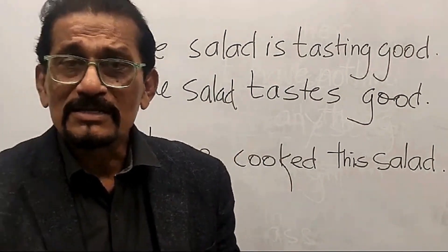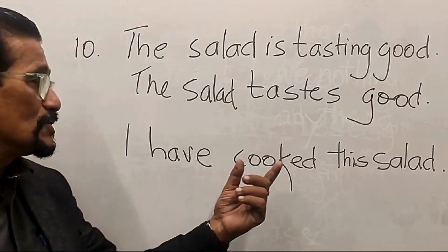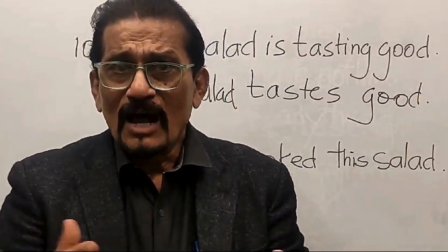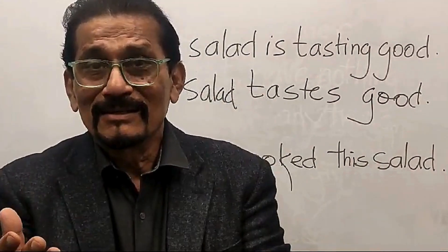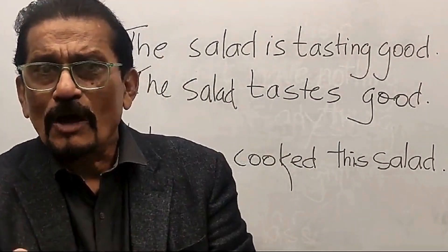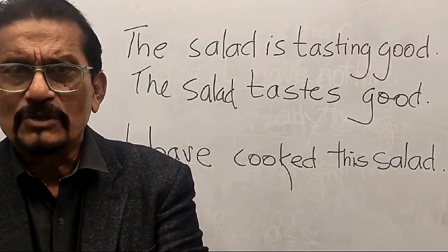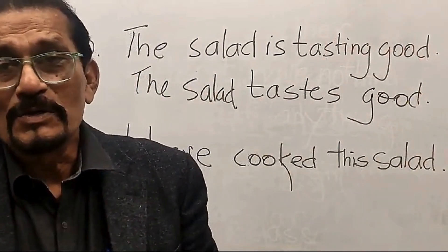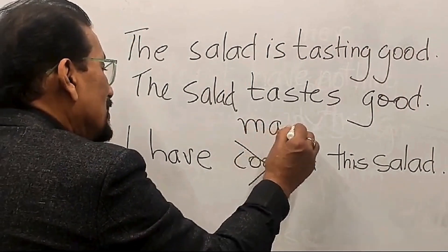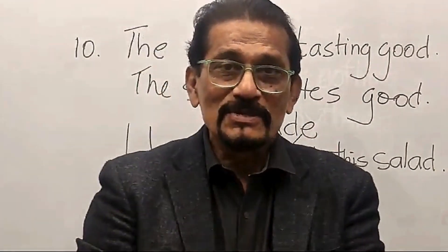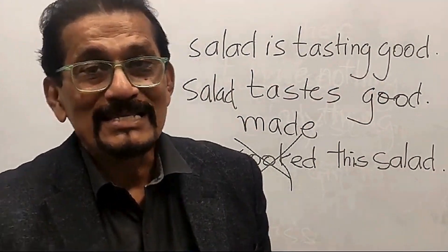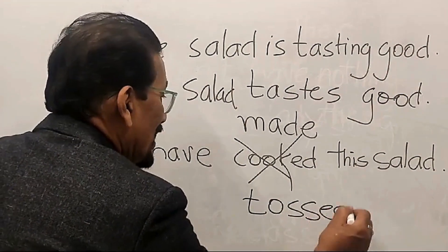Coming back to the topic of salad — somebody tells me, 'Would you like to have salad? I have cooked this salad.' Excuse me — can you cook salad? Cooking is cutting, frying, adding spices. For a salad you just chop certain vegetables, put them together with some leaves, toss them, and make them into a salad. So you would never say 'cook this salad.' You would say 'I made this salad.' Or even better, using the right action verb: 'I've tossed this salad' — T-O-S-S-E-D. That would be wonderful: 'It's a tossed salad, and I've tossed this salad.'